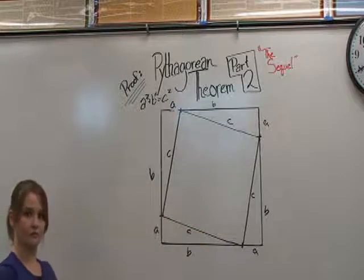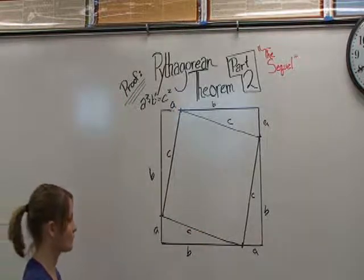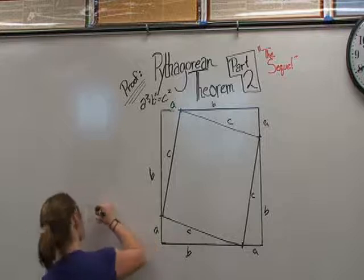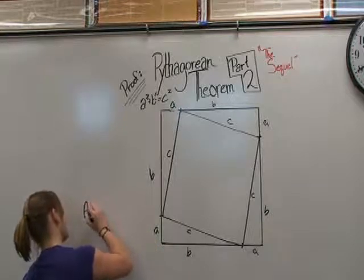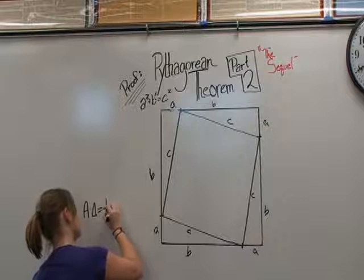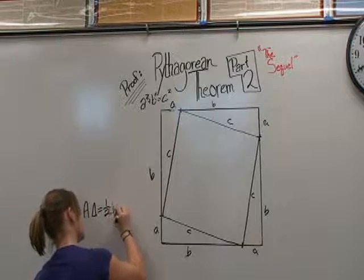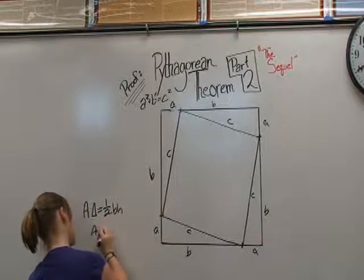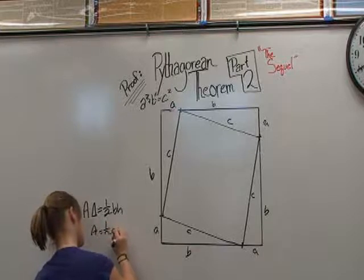The formula defining the area of a triangle is one-half base times height. All four triangles equal one-half AB. Add them all up, and it equals 2AB.